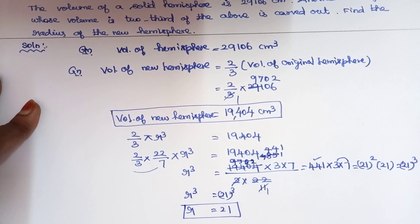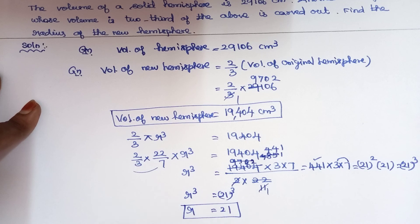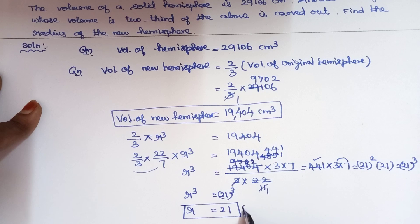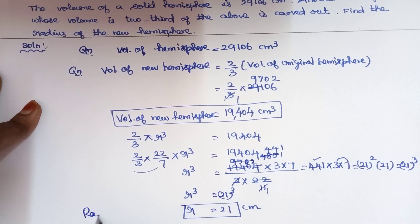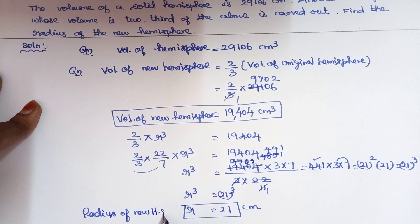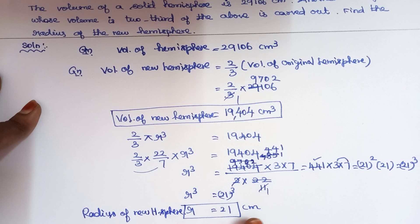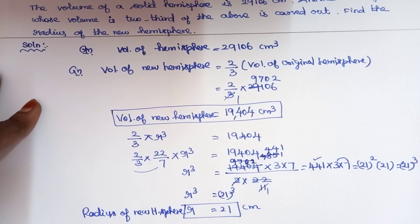Therefore, r cube equals 21 cube, so the radius of the new hemisphere equals 21 cm. The radius of the new hemisphere is 21 centimeters. Thank you.